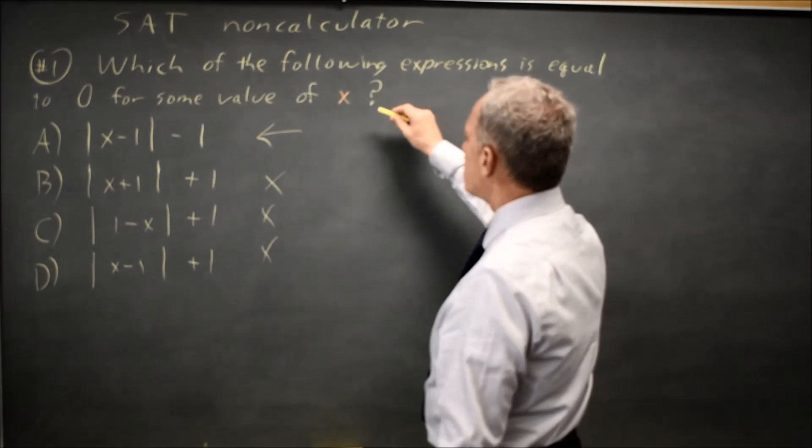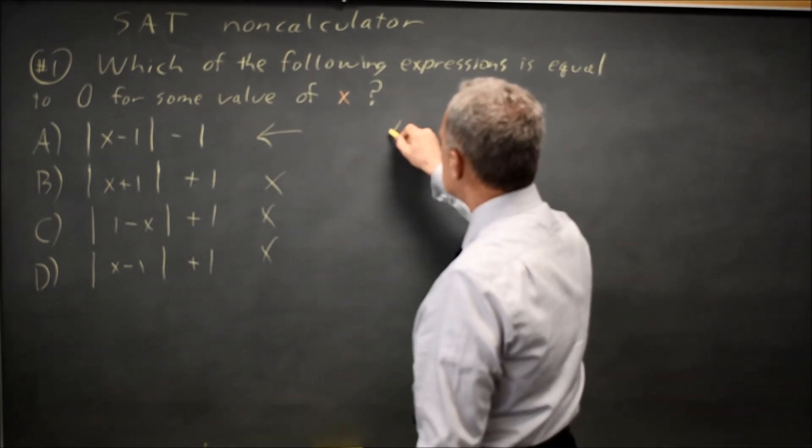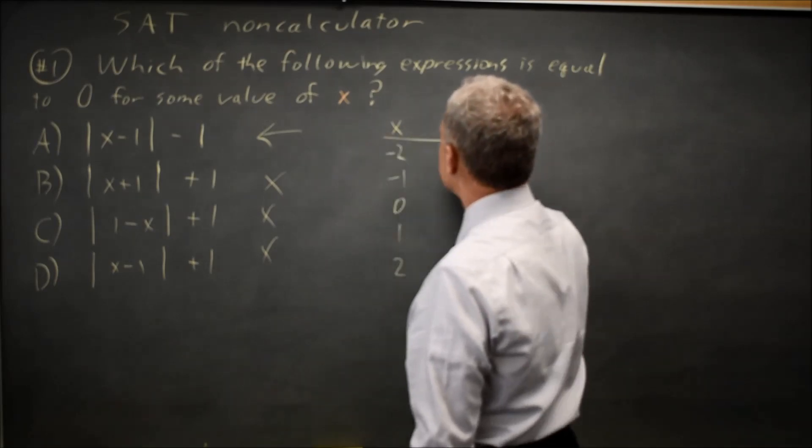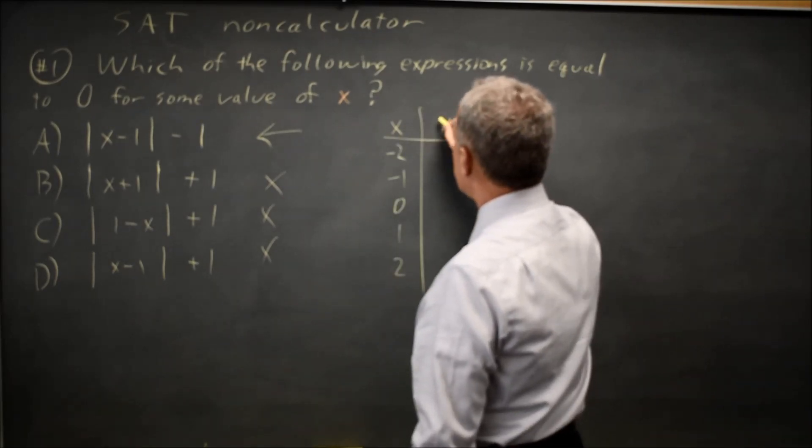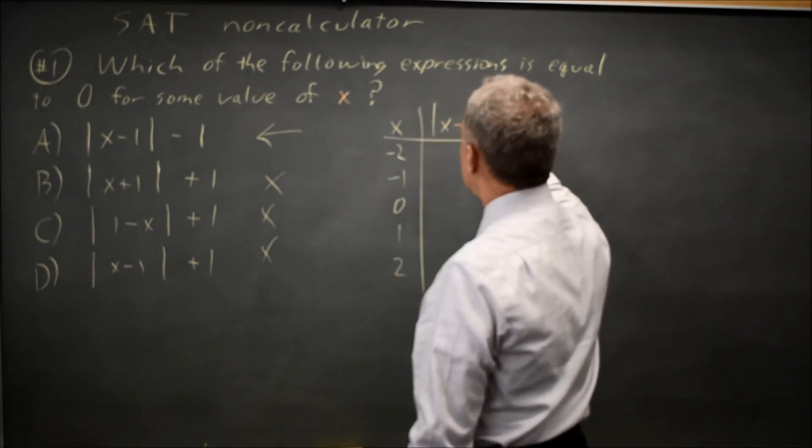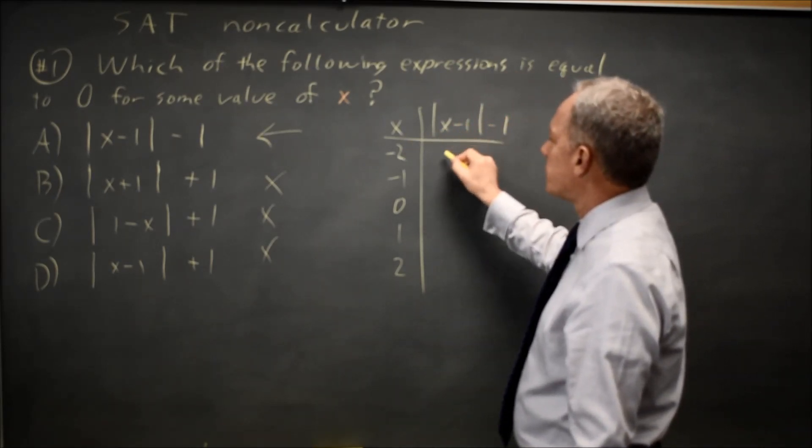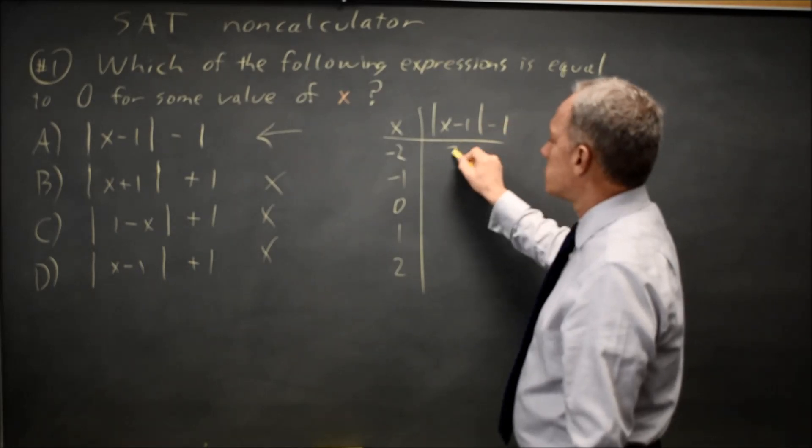Alternatively, you could graph each of these by making a table of values, so x equals negative two, negative one, zero, one, and two, and absolute value of x minus one, minus one. At negative two, negative two minus one is negative three, absolute value is three, three minus one is two.